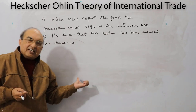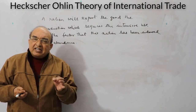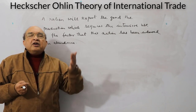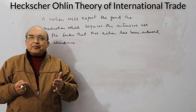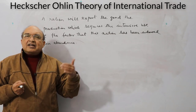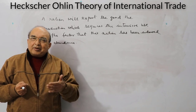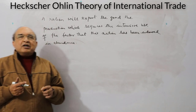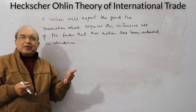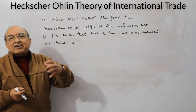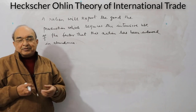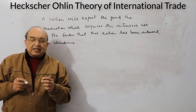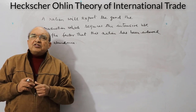Different nations are endowed with different factors of production. The factors considered in this theory are capital and labor. If a nation is generously endowed with labor, it will export labor-intensive commodities. If a country has been generously endowed with capital, it will export capital-intensive goods. Comparative cost advantage still remains, but the source of that advantage is factor endowment rather than technology.